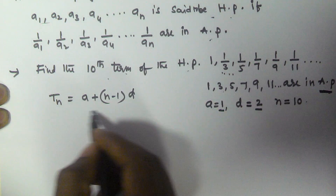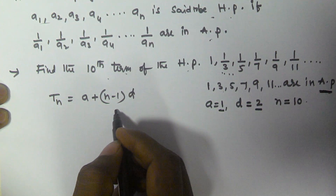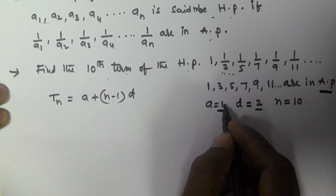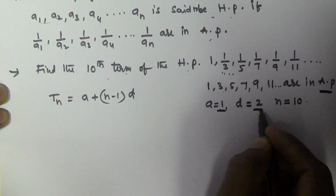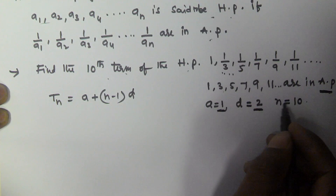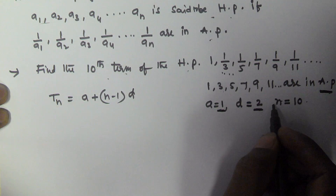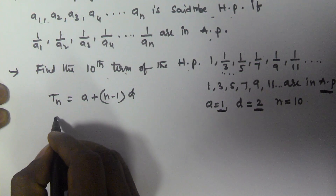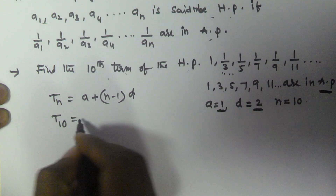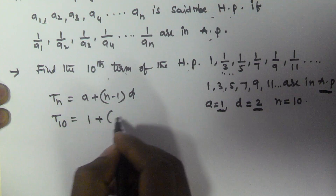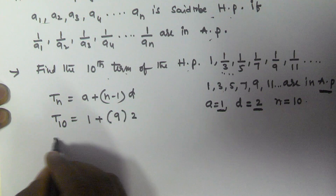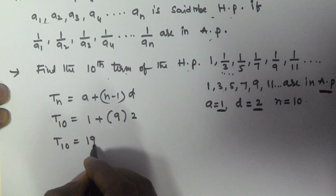We substitute these values in the formula tn = a + (n − 1) × d, which is the formula to find the nth term in arithmetic progression. With a = 1, d = 2, and n = 10, we get t10 = 1 + (10 − 1) × 2 = 1 + 9 × 2 = 1 + 18. So t10 equals 19.